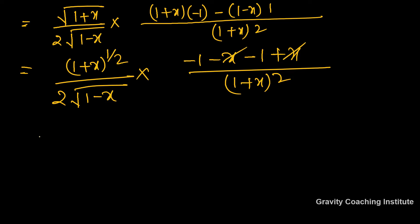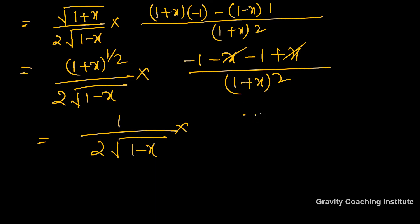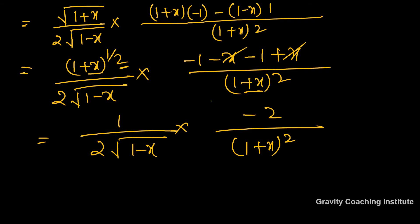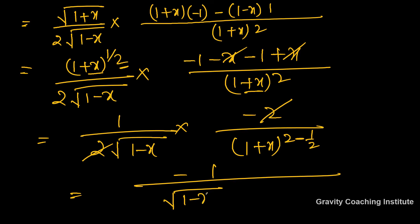The x terms cancel. So we get 1/(2·√(1-x)) multiplied by −2/(1+x). Since both have the same base, bringing the power to the denominator and cancelling the 2s gives the final answer: −1 / [√(1-x) · (1+x)^(3/2)].